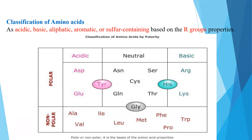Based on group properties, polar amino acids contain aspartic acid and glutamic acid, which are negatively charged (acidic), whereas positively charged basic amino acids such as arginine and lysine also come under the polar amino acid group. Neutral amino acids include asparagine, serine, cysteine, glycine, threonine, histidine, and tyrosine. Non-polar amino acids include alanine, valine, isoleucine, leucine, methionine, phenylalanine, proline, and tryptophan.